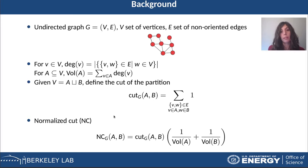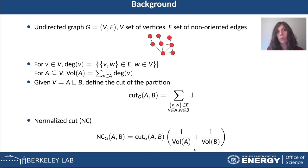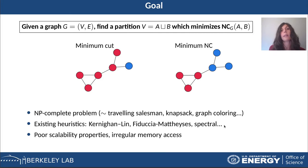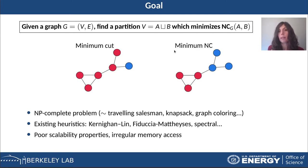Since we are interested in the fact that the two partitions have the same size, we have to consider a finer definition called the normalized cut. The technical definition is not important, but what is important to remember is that it takes into account both the cut and the volumes of the two subsets. Our goal is: given a graph, find a partition of its vertices which minimizes the normalized cut.